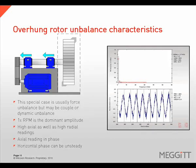Overhung fans exhibit special vibration characteristics. High axial 1 times readings as well as high radial 1 times readings are common on both bearings. The axial phase readings should be in phase, while the horizontal phase readings can be unsteady.